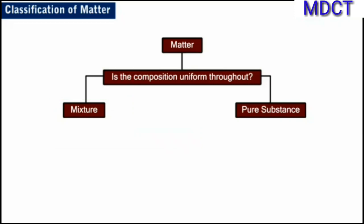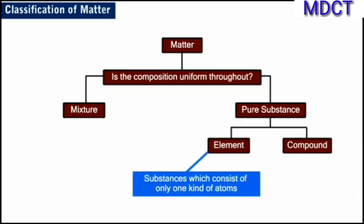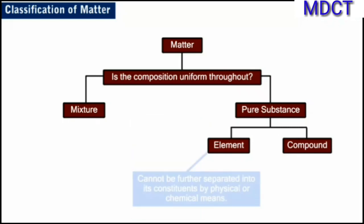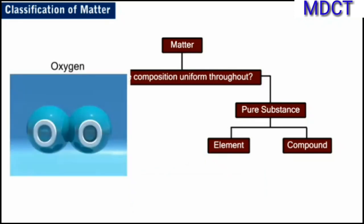Pure substances can be further classified into elements and compounds based on separation into their respective constituents. Substances which consist of only one kind of atoms are called elements. Examples of elements are sodium, copper, silver, hydrogen, oxygen, etc. An element cannot be further separated into its constituents by physical or chemical means. For example, oxygen consists of only oxygen atoms and cannot be further separated into its constituents.